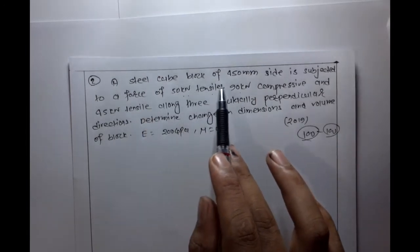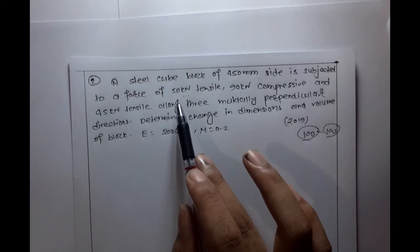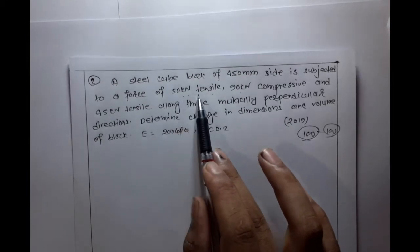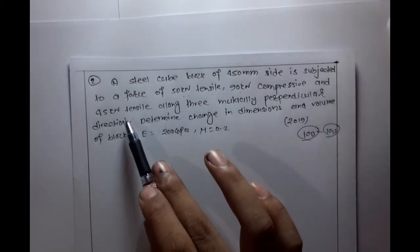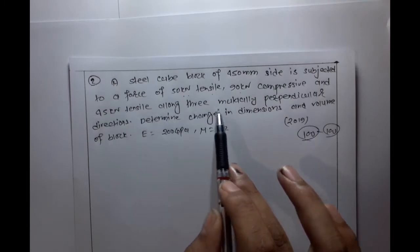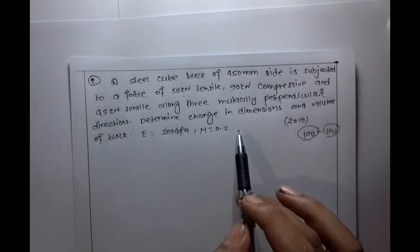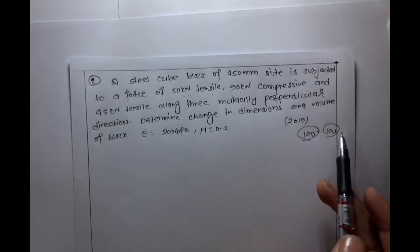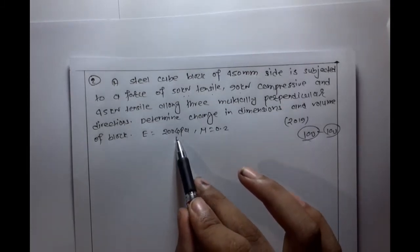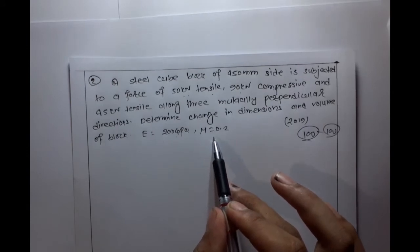Question one: A steel cube block of 450 mm side is subjected to a force of 50 kilonewton tensile, 90 kilonewton compressive, and 45 kilonewton tensile along three mutually perpendicular directions. Determine the change in dimension and volume of the block. Modulus of elasticity E = 200 GPa. Find the Poisson's ratio mu.